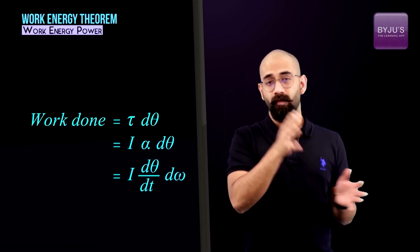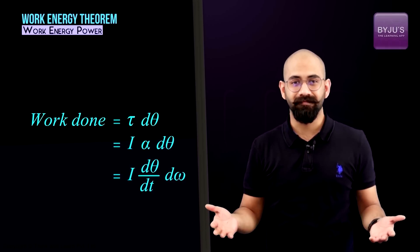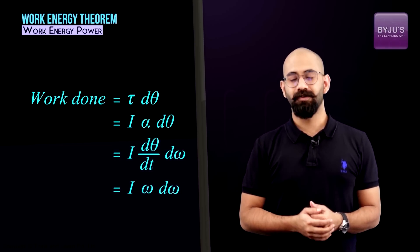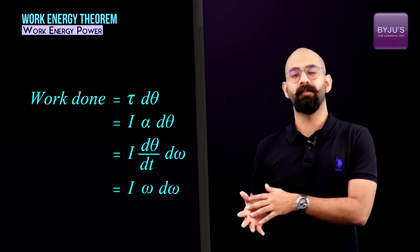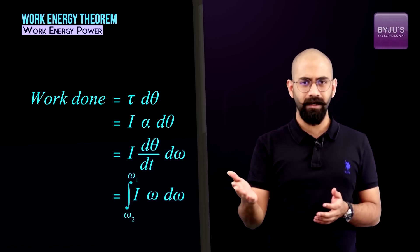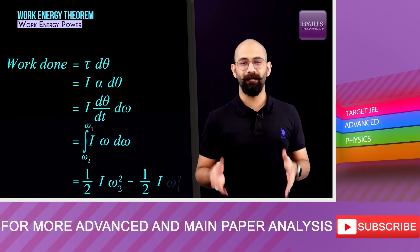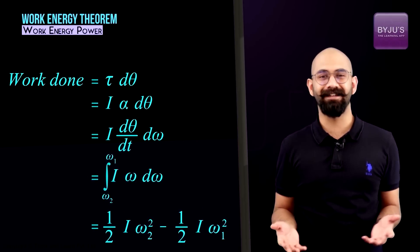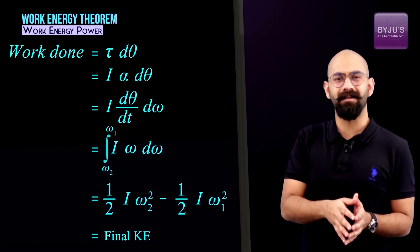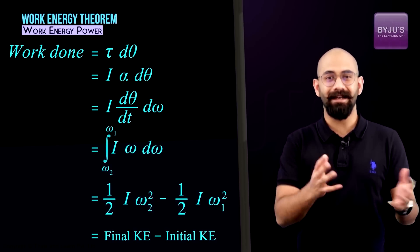Since dθ/dt is nothing but ω, we get: work done = I·ω·dω. Integrating with limits ω₁ to ω₂, we get: work done = ½I·ω₂² − ½I·ω₁². And ½I·ω² is the rotational kinetic energy. So the work done equals the final rotational kinetic energy minus the initial rotational kinetic energy — which is exactly the work-energy theorem.